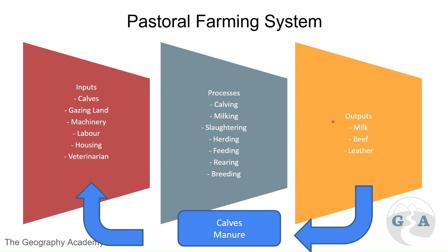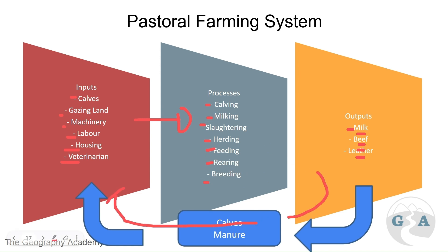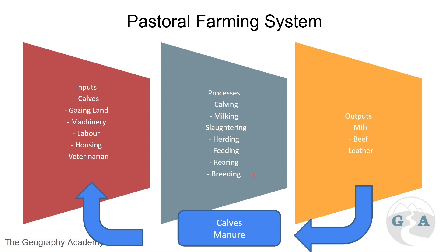Pastoral farming involves rearing animals. In this example with cattle, the outputs are milk, beef, and leather. Inputs include baby calves, grazing land, machinery for milking, labor, housing for animals, and veterinarians either on-site or called out to the farm. The processes include calving, milking, slaughtering, cutting meat, herding, feeding, rearing, and breeding. Calves can be a recycled product, and manure can be spread as fertilizer — as we saw with the tractor. Grazing land requirements are also quite different compared to arable land.